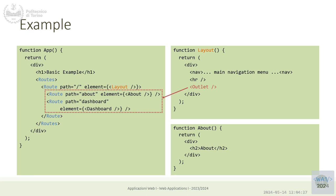Question: can we have more than one outlet? If you duplicate Outlet in another part, the About component will be rendered in two different places — like calling a function twice. You cannot have more than one independent outlet because the matching is always one match, so there's no possibility of matching more than one child simultaneously.